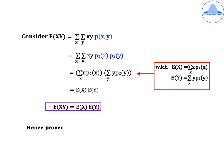Rearrange the terms to get the final result. This equals [summation over x of x·p1(x)] times [summation over y of y·p2(y)]. As shown in the red highlighted box, E(x) = summation over x of x·p1(x) and E(y) = summation over y of y·p2(y). Using these results, the final step gives E(x)·E(y). Therefore E(xy) = E(x)·E(y), and hence the result is proved.